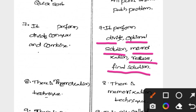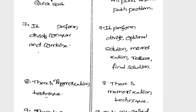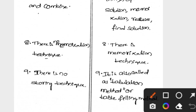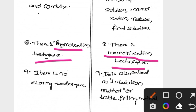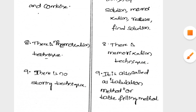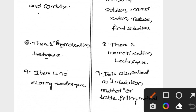In Divide and Conquer there is no memoization process — we do not store any values. Whereas in Dynamic Programming, the process of storing values in a table is called memoization or memorization technique. Because of this storing technique, Dynamic Programming is also called the tabulation method or table filling method.